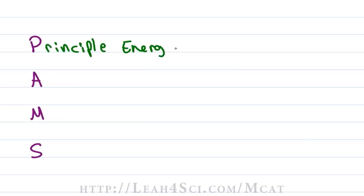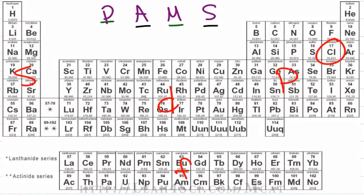P stands for principle energy level and is designated by the letter N. This has to do with which level on the periodic table you will find that specific electron. So if we look at the periodic table, starting in hydrogen we have N equals 1 and then going down we have 2, 3, 4, 5, 6 and 7.